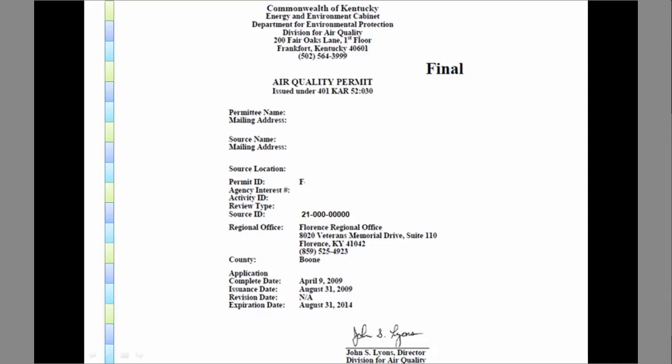Let's begin with the cover page. It has some very important information such as the permittee and source name and mailing addresses. The mailing address may be the same as the source location. The source location is where the facility actually resides — it is not a P.O. box, but rather a physical address.